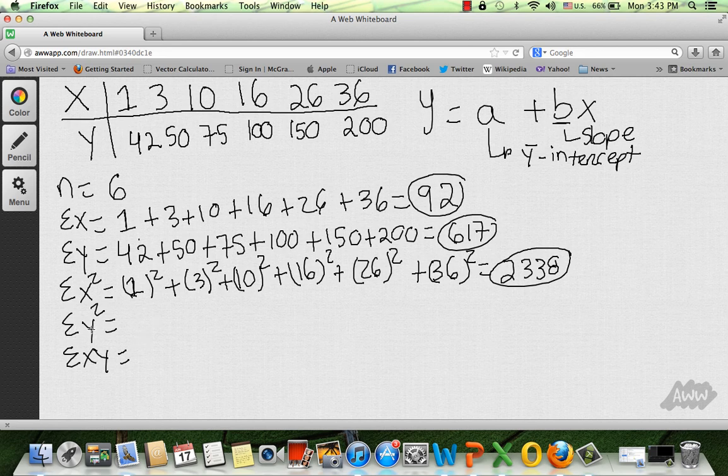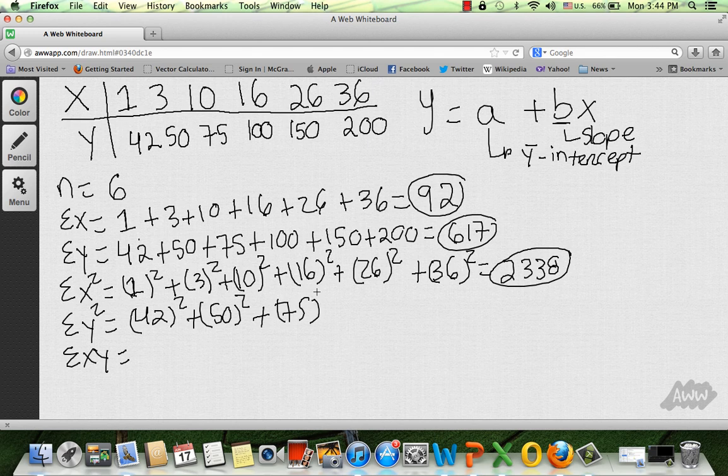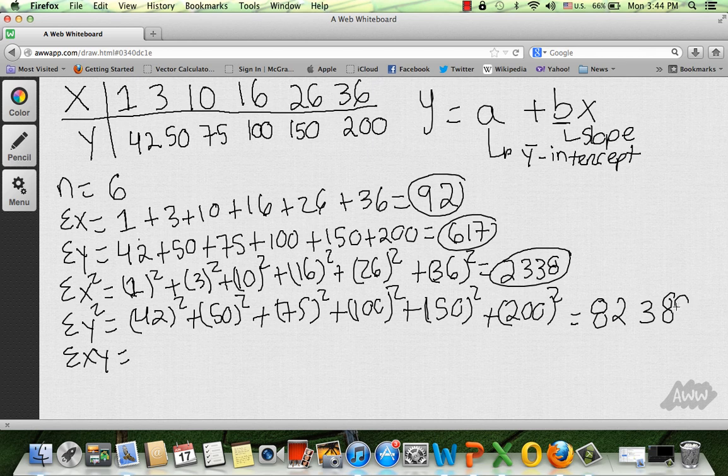Now we're going to do the sum of y squared. Again, the same thing, 42 squared plus 50 squared plus 75 squared plus 100 squared plus 150 squared plus 200 squared. So all this is going to be equals to 82,389.